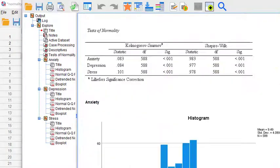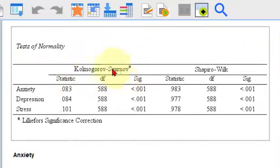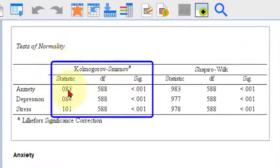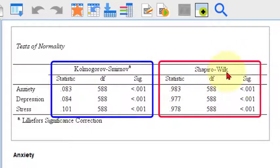There's the Descriptives and here's the Kolmogorov-Smirnoff. These first columns, one, two, three, these are the KS tests, Kolmogorov-Smirnoff test. And then the next three, one, two, three, the Shapiro-Wilk.